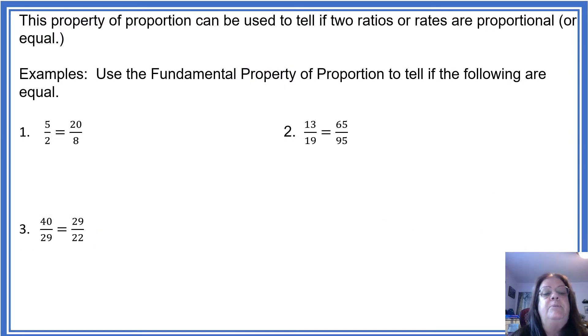This property of proportion can be used to tell if the following are equal. So what we're going to do is multiply the 5 times the 8, and then the 2 times the 20, and see what we get. Well, 5 times 8 we know is 40, and the question is, does that equal 2 times 20? Sure enough, 2 times 20 is indeed 40.